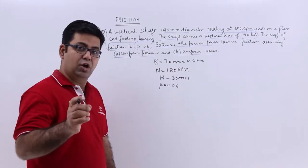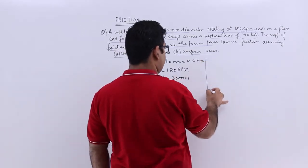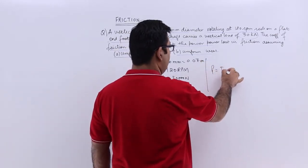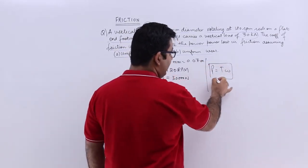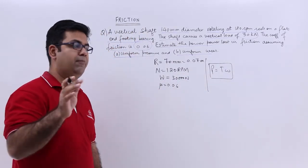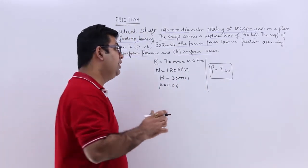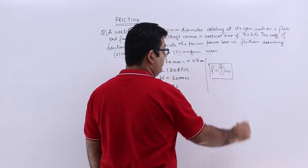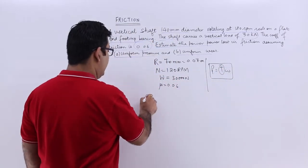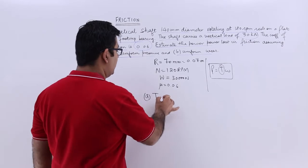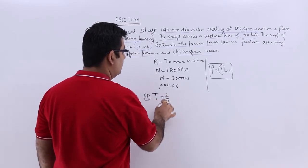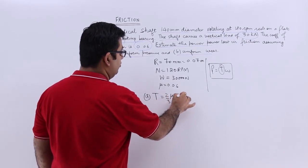Now the power lost in friction is T into omega. This is same for uniform pressure and uniform wear. The only difference would be this T. So T as per the uniform pressure is 2 third mu wr.